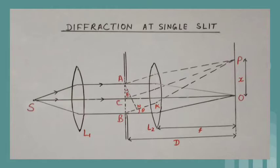The secondary waves from points equidistant from the centre C of the slit, lying in portions AC and BC of the wave front, travel the same distance in reaching point O on the screen — that is, they have zero path difference — and hence at point O the intensity is maximum.